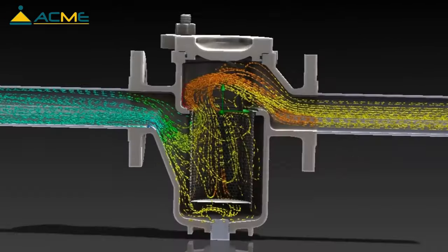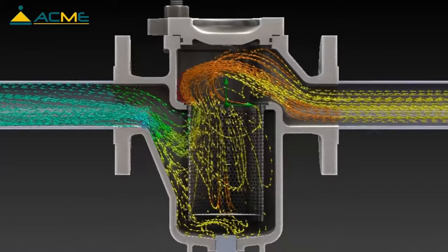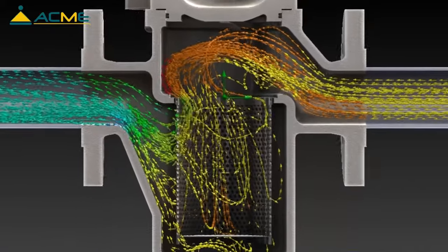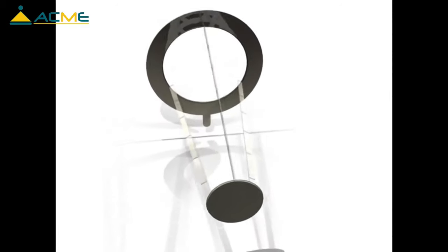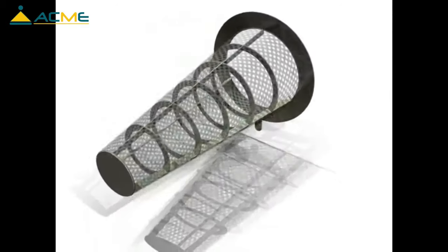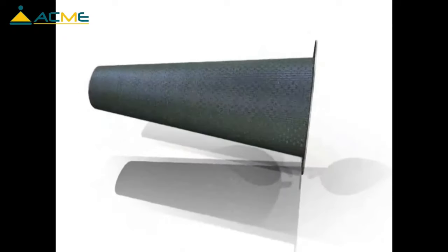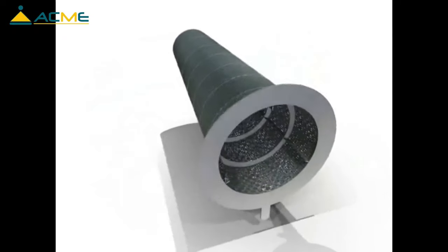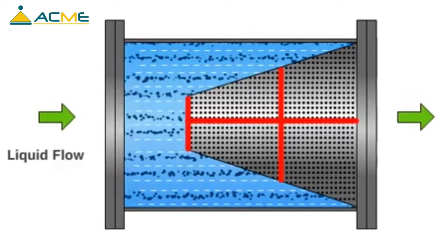Basket strainers are installed to protect equipment from damage caused by unwanted debris that may be in the pipeline. The unwanted debris could be dirt or other foreign particles that make their way into the process fluid. Typically, basket strainers are installed in horizontal pipelines and in situations where high flow capacity is required.